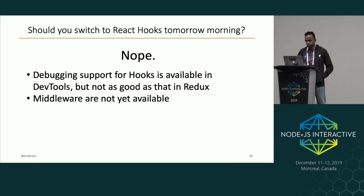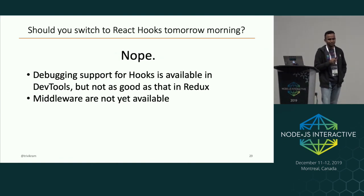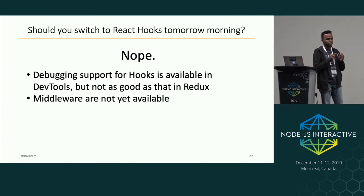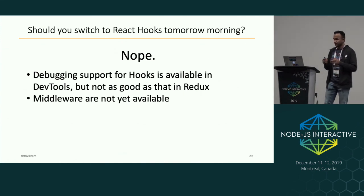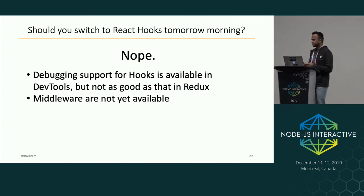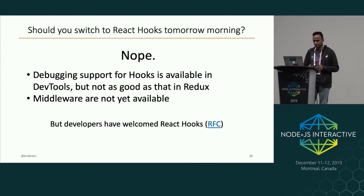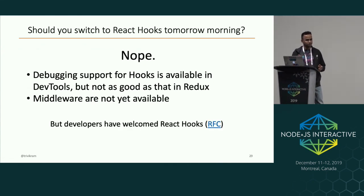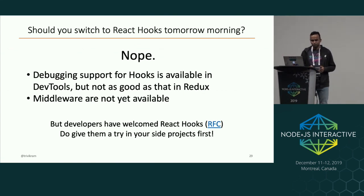Debugging support is not as good, and middleware is not yet available. If you use Redux, you may be using middleware like Redux Thunk, Redux Sagas, or Redux Observables — that is not available in Hooks. But developers have welcomed React Hooks; there were 1,600 comments on the RFC. So do give it a try in your side projects first.